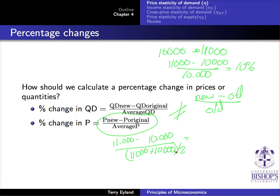That's slightly different from 10%. Why do we use the average? The main reason is to ensure the elasticity calculation is symmetric between the two points — it shouldn't matter which price you call the new price and which you call the original.